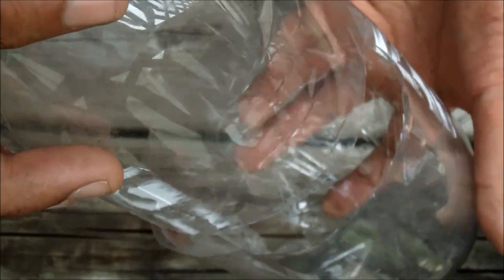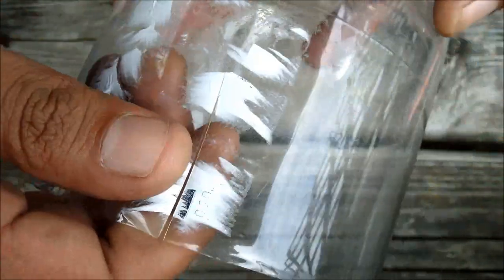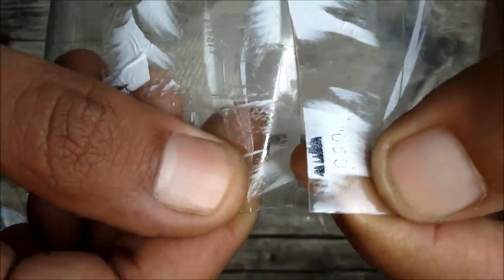Now the first thing you do is cut your bottle in half. Once you have the top half, you can just set that aside. Then you take your bottom half and cut three slits